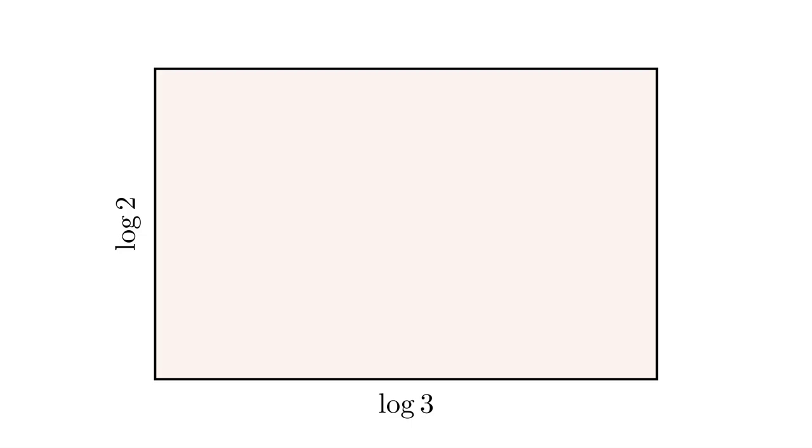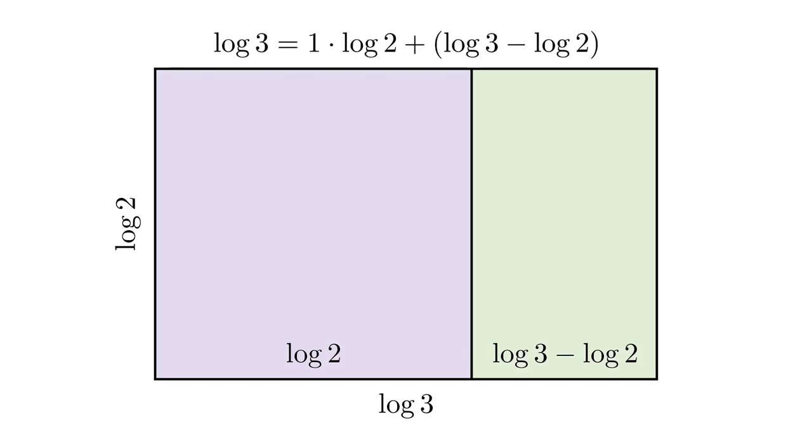Then Euclidean algorithm asks us to think about how many times log 2 fits inside log 3. And we can fit log 2 inside log 3 once. That's the big square there. And there's some remainder. The remainder is log 3 minus log 2. So the first step of Euclidean algorithm is summarized as follows: log 3 is one copy of log 2 plus this remainder of log 3 minus log 2.